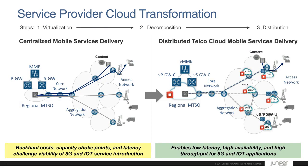Service provider cloud transformation really has three steps. The first step is virtualization — taking physical functions, virtualizing them, and running them on generic compute in a virtual machine or container environment. The second step is decomposition: taking network functions and breaking them up into their subparts, which allows you to independently scale those subcomponents or distribute them where needed. The third step is distribution — now that you've decomposed a function into its basic parts, you can distribute those parts anywhere you need in the network.